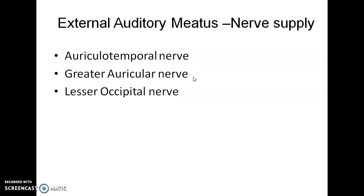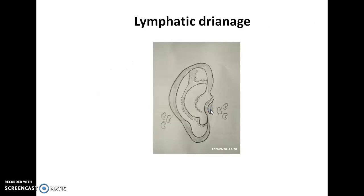For nerve supply: the auriculotemporal nerve supplies the majority of the auricle; the greater auricular nerve is another major nerve; the lesser occipital nerve supplies the posterior aspect of the scalp and occipital region, and it also supplies the external auditory canal. Also notable is the auricular branch of the vagus nerve, which also supplies the external auditory canal.